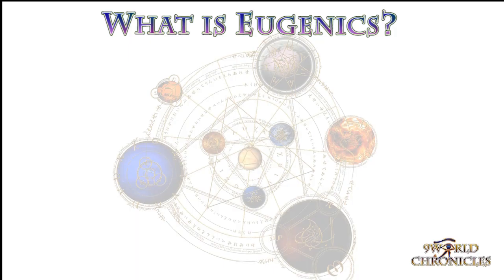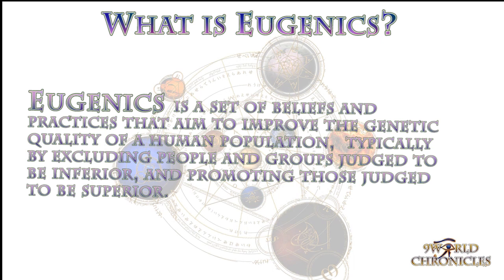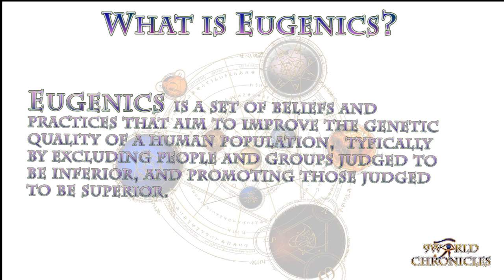Eugenics is a set of beliefs and practices that aim to improve the genetic quality of the human populace. This is typically by excluding people and or groups who are judged to be inferior or unfit, and by promoting groups that we would deem to be superior groups.